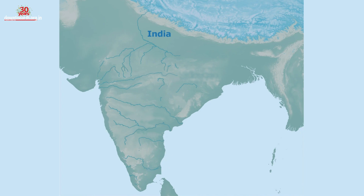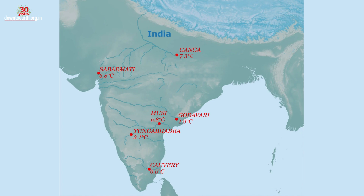The AI algorithm projects a temperature rise of 0.5 degrees Celsius for Kaveri, 1.9 degrees Celsius for Godavari, 3.1 degrees Celsius for Tungabhadra, 3.8 degrees Celsius for Sabarmathi, 5.8 degrees Celsius for Musi, 7.3 degrees Celsius for Ganga, and 7.8 degrees Celsius for Narmada Basin.